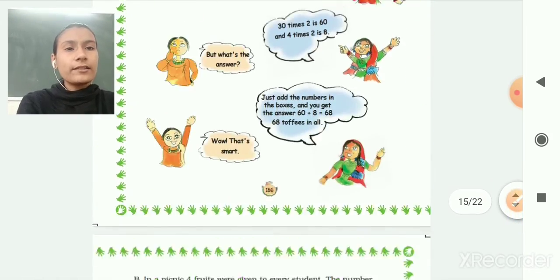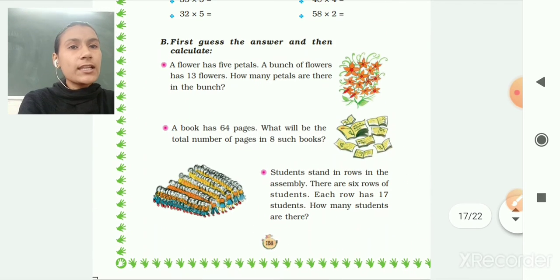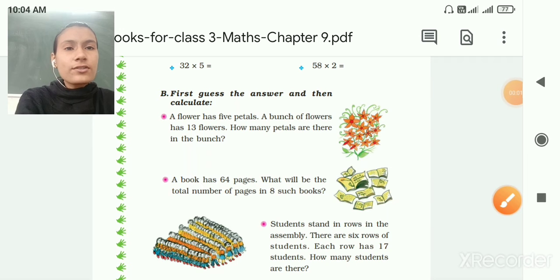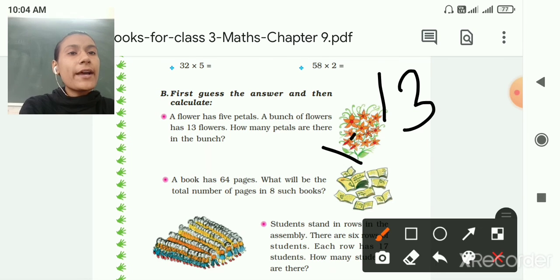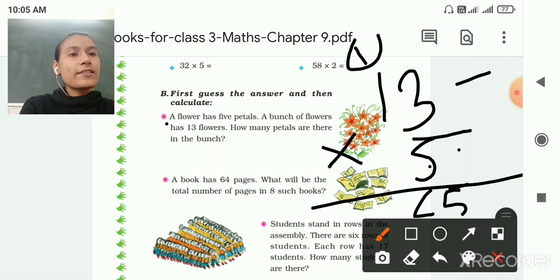Now let's see the next solve the following. You can see here on page number 138. A flower has 5 petals. A bunch of flowers has 13 flowers. So how many petals are there in the bunch? So 13 multiply by 5. 5 3s are 15, 5 here 1 carry. 5 1 is 5 plus 1 is equal to 6. So 65 petals are there in the bunch.